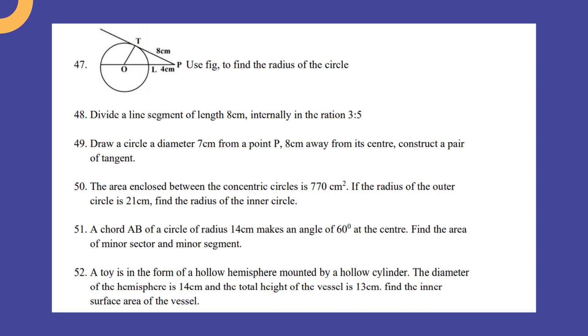A toy is in the form of a hollow hemisphere surmounted by a hollow cylinder. The diameter of the hemisphere is 13 centimeter and the total height of the vessel is 13 centimeter. Find the inner surface area of the vessel.